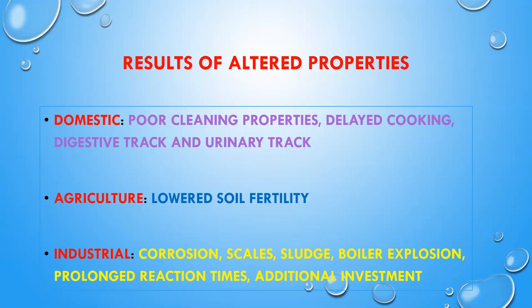If contaminated water is used for agricultural purposes, drip irrigation systems may get choked. Watering plants or crops with such water causes deposition of salts, hampering mechanisms like osmosis and imbibition that are essential for plant survival, ultimately leading to lower soil fertility and reduced crop yield.